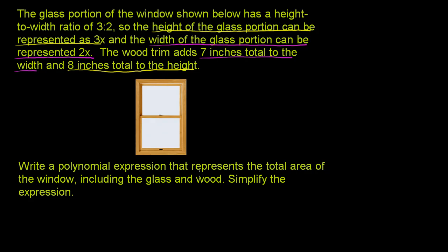They ask us to write a polynomial expression that represents the total area of the window, including the glass and wood, and simplify the expression. The ratio of 3 to 2 is for the glass portion — that entire inner portion, even including the divider in the middle. The height of the glass portion can be represented as 3x, just this distance here.